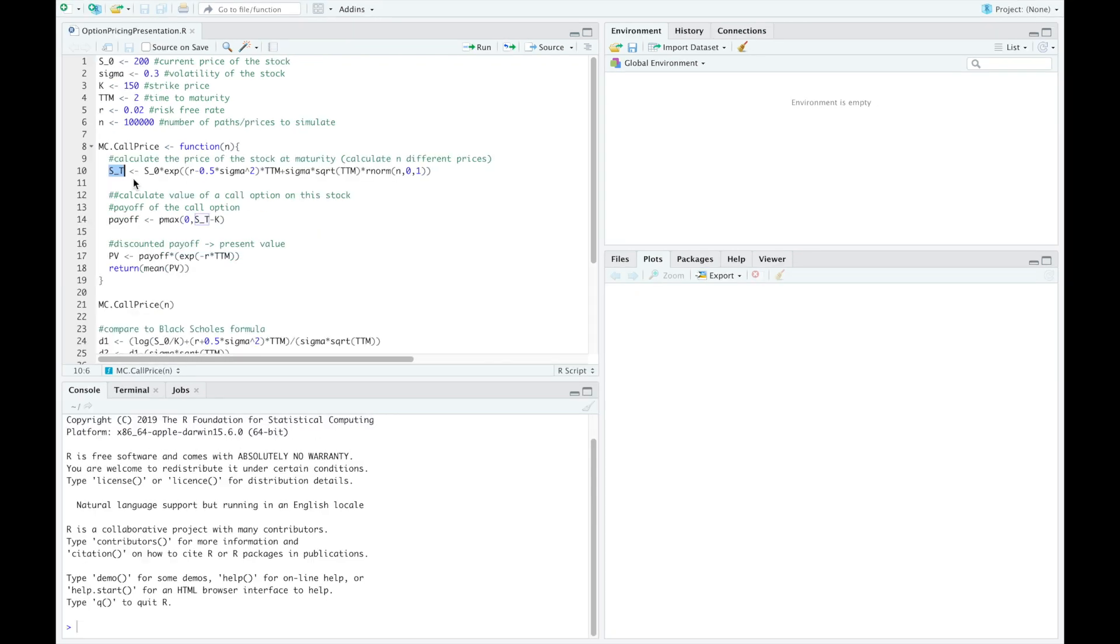The next step is to calculate the value of a call option on the stock. We therefore calculate the payoff of the call option for each of the n prices. After this we discount each of these payoffs with the risk-free rate such that we get the present values here. As a last step we calculate the mean overall discounted payoffs to get the Monte Carlo estimator for the fair price of this European call option.